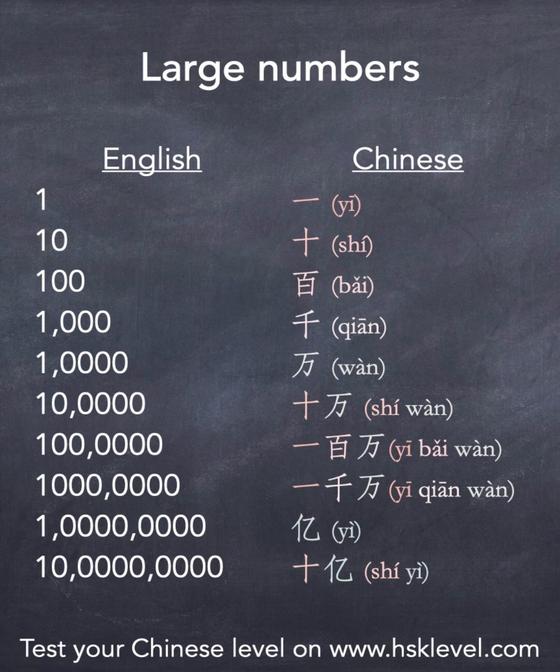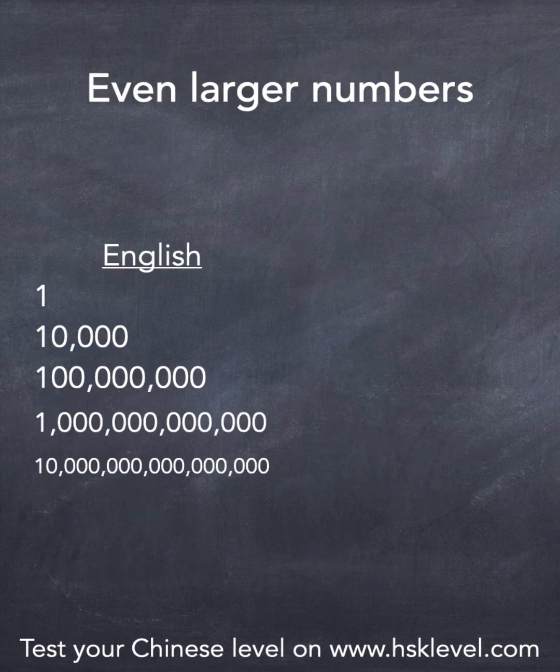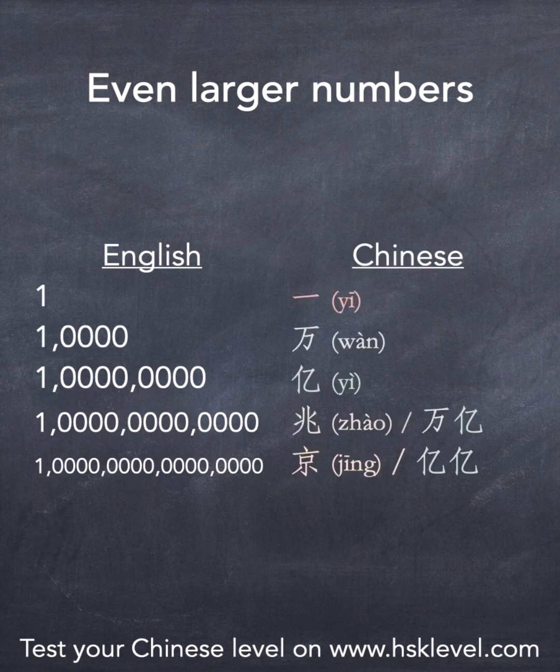One billion is just ten yì, so it is shí yì. Now, if we want to express even larger numbers, we still have to group the digits by groups of four. So one is still yī, ten thousand is still wàn, and one hundred million — a one with two groups of four zeros — is yì.